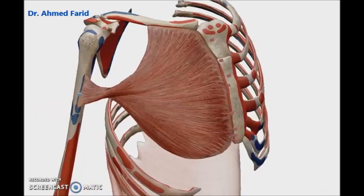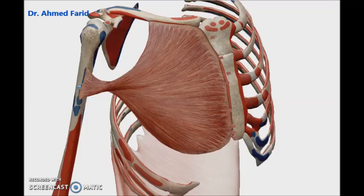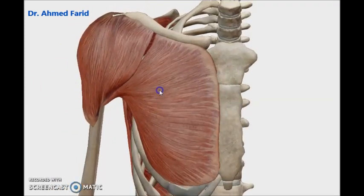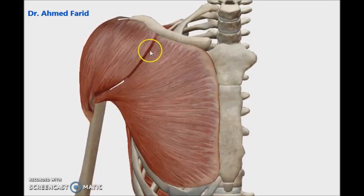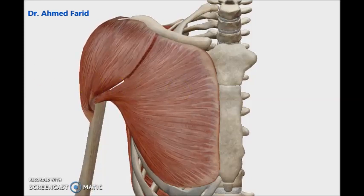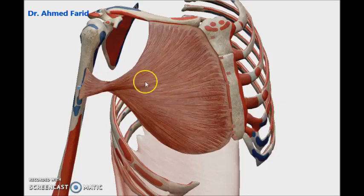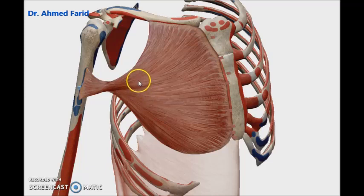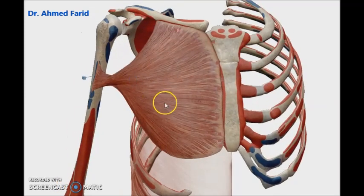The other action is medial rotation of the humerus at the shoulder joint, as seen in this animation — the insertion is approximated to the origin of pectoralis major. As a rule: pectoralis major is anterior to the shoulder joint so it will flex the shoulder joint, and being inserted into the front of the humerus it will produce medial rotation of the humerus on the shoulder joint.